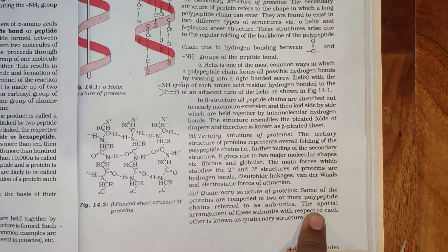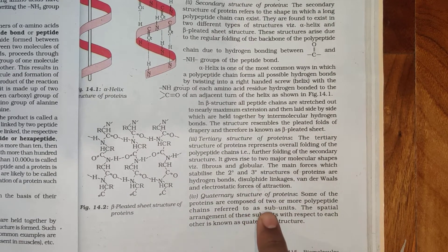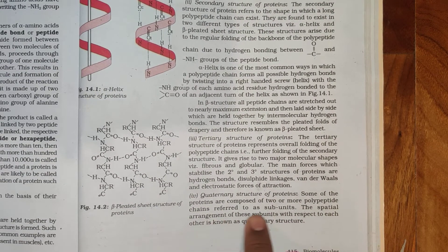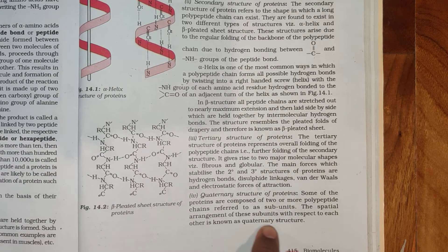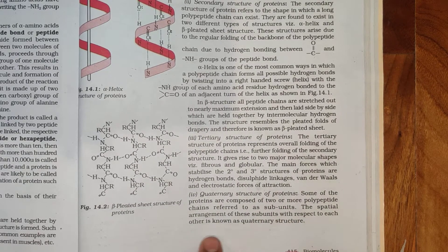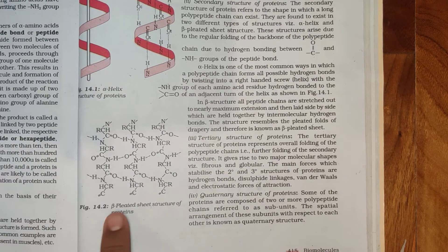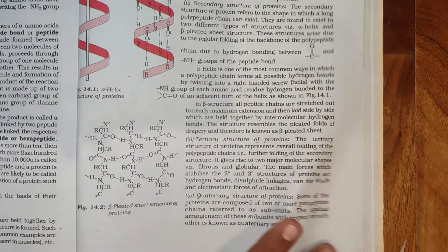Quaternary Structure of Proteins: Some of the proteins are composed of two or more polypeptide chains referred to as subunits. The spatial arrangement of these subunits with respect to each other is known as quaternary structure. Beta pleated sheet structure of the proteins.